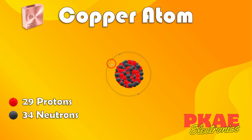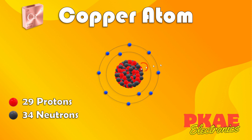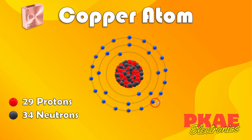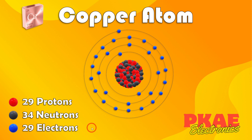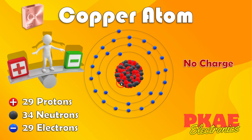Around the nucleus there are electrons distributed in shells. The first shell has two electrons, the second shell has eight, the third shell has 18, and the outer shell has one — giving us a total of 29 electrons. Protons are positively charged, electrons are negatively charged, and neutrons have no charge because they are neutral. Given we've got 29 protons positively charged and 29 electrons, this atom is balanced and is said to have no charge — the atom as a whole is neutral.